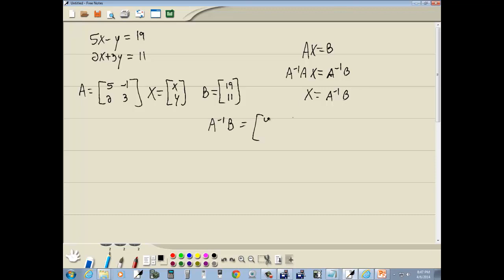So this is equal to four, one. Now our X matrix, which is our variable set, x was first, y was second, which means this will be x and this will be y. So our answer for this problem will be four, one.